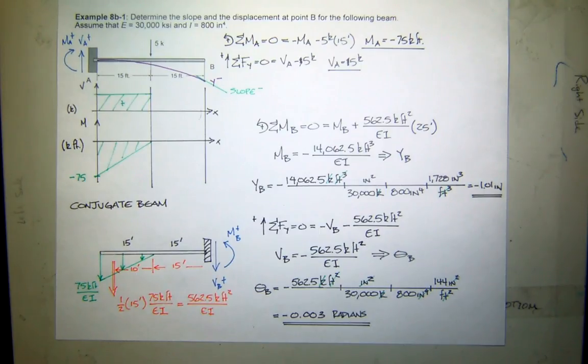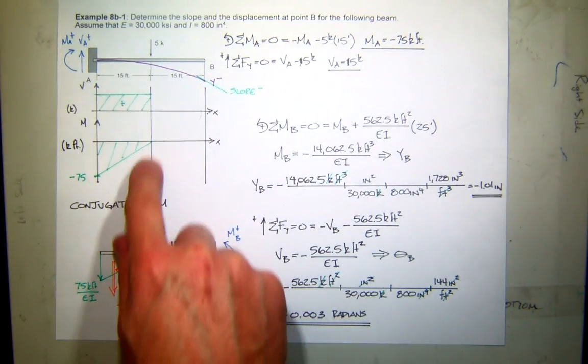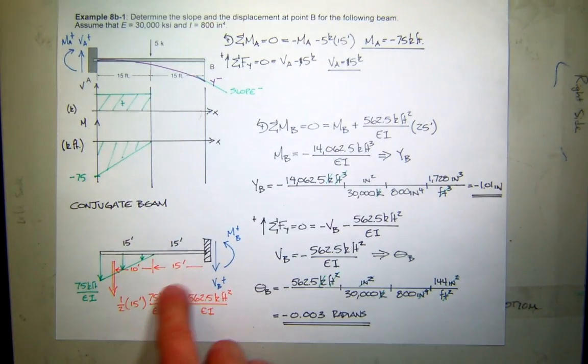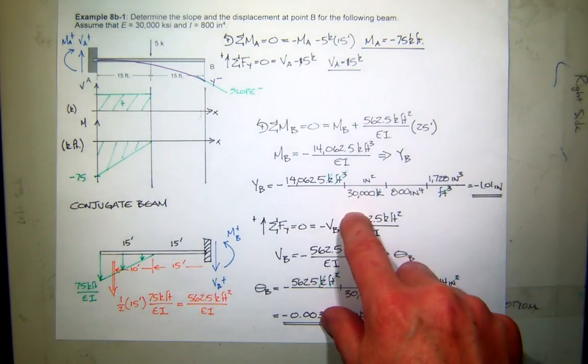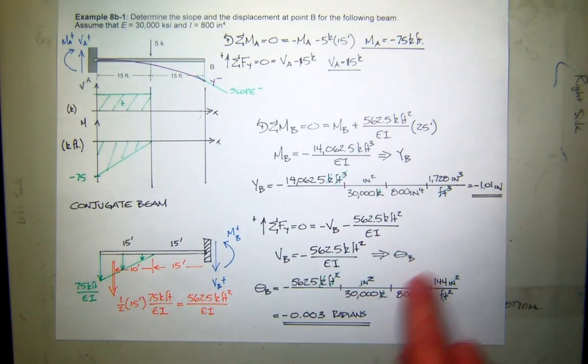So what do you think about that? So far, it's kind of like all your skills rolled into one. You had to find some reactions, draw a shear moment diagram, apply the new skill of developing the conjugate beam with the load applied, then go back and find shear moment at a point, and then relate that to displacement and rotation. Okay.